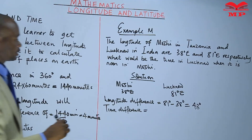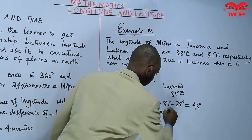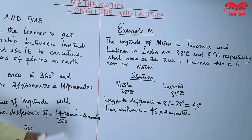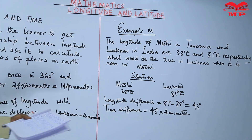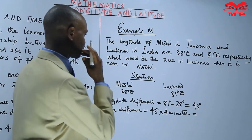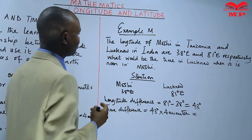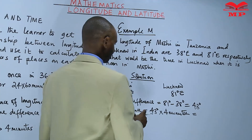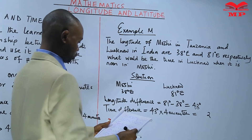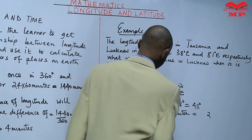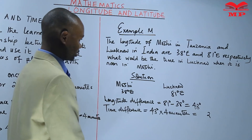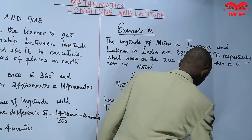The time difference: we take 43 degrees times 4 minutes, because a longitude difference of one degree gives a time difference of 4 minutes. So we calculate 43 times 4: 4 times 3 is 12, carry 1; 4 times 4 is 16, plus 1 is 17. That gives us 172 minutes.